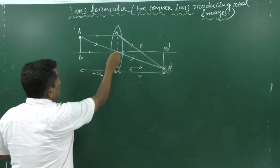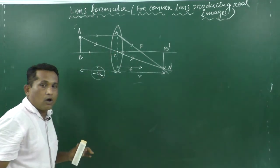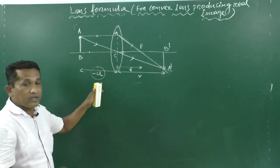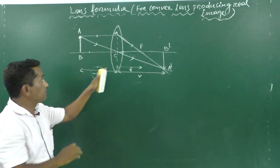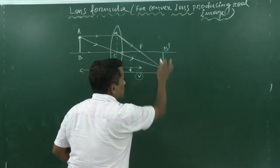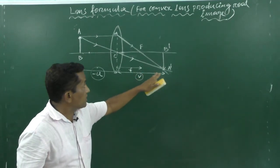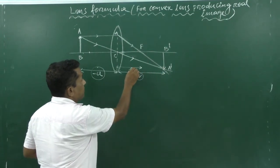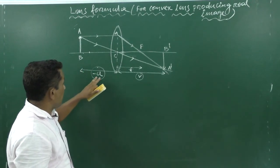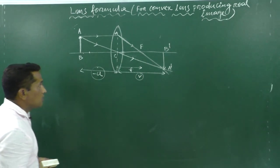A dash B dash is the real image of object AB. CB is your object distance, and it is −u because it is on the left-hand side of the optical center. V is the image distance of image A dash B dash, and F is the focal length. Using u, v, and f we will derive the lens formula.